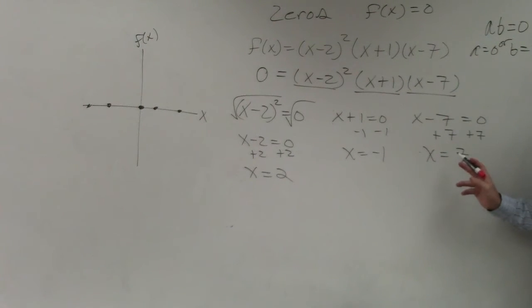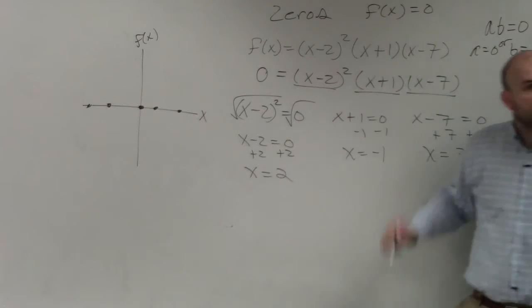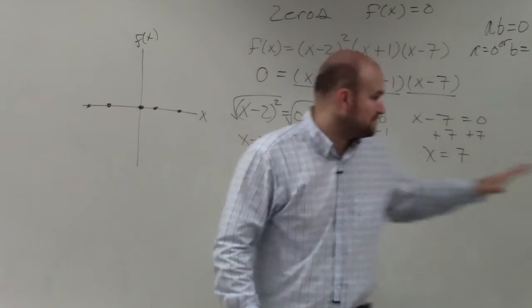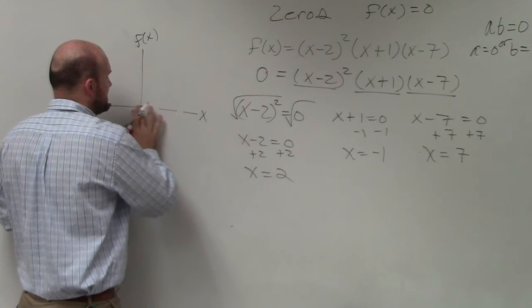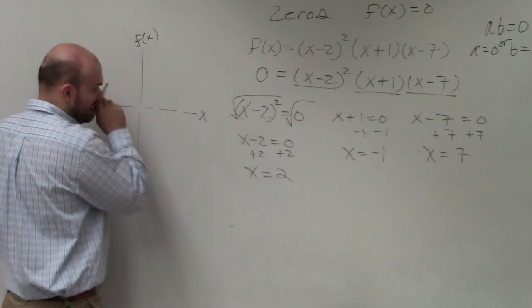Meaning, if I plug in one of those three numbers into this equation, it's going to make the equation true, which we call the zeros, which we also call the x-intercepts. When you look at a graph, these numbers represent the x-intercepts. Let's actually plot them.